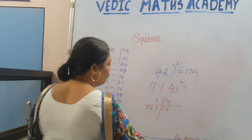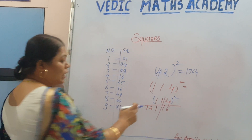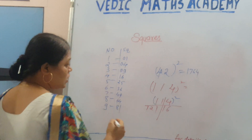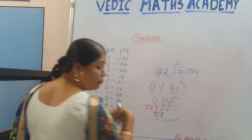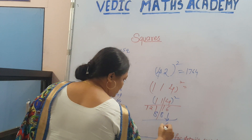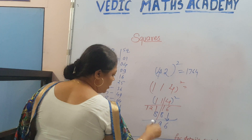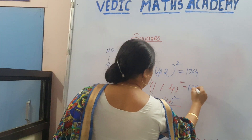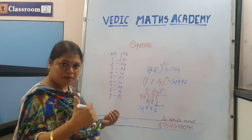Now for 114 squared: we take the square of 4 (which is 16) and the square of 11 (which is 121). We place one number on one side and the other on the other side. 6 remains as it is. 8 plus 1 is 9. Then 8 plus 1 again is 9. And finally 12. So the answer is 12996. Isn't it amazing?